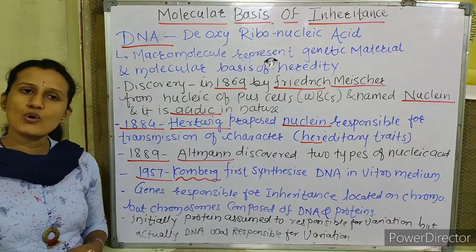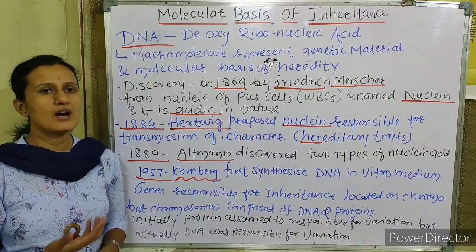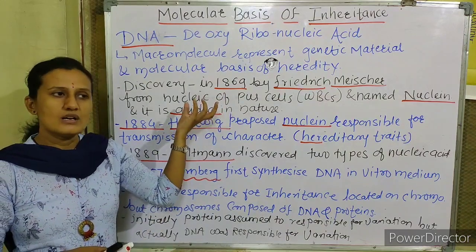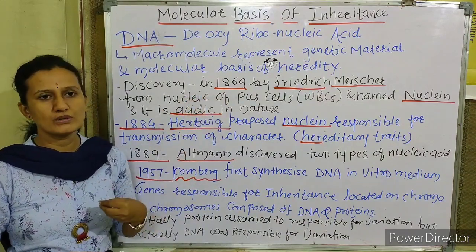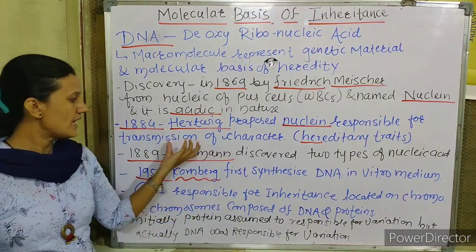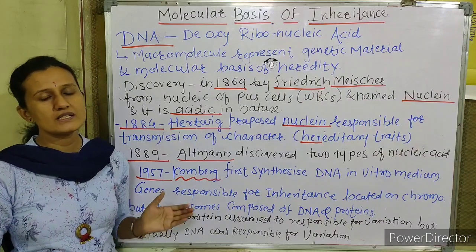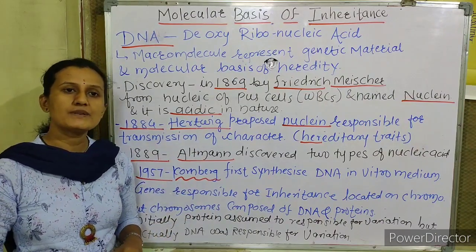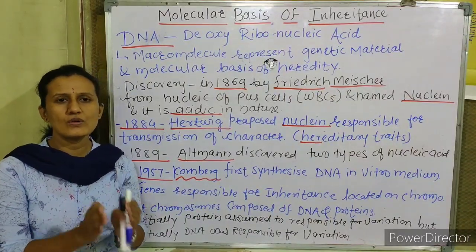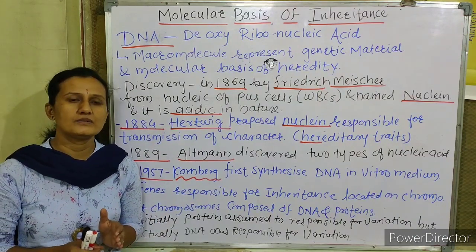From these discoveries, we know how DNA was initially understood. Frederick Miescher discovered the Nuclein from the nucleus. Hertwig proposed it is responsible for heredity. Altmann discovered nucleic acid. And Kornberg first synthesized DNA in the laboratory. Scientists and geneticists went on with the discovery of chromosomes, DNA, and genes. We know that in our nucleus there is chromosomal material — chromosome DNA — and all genes are present on it.